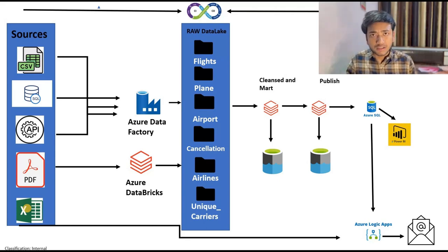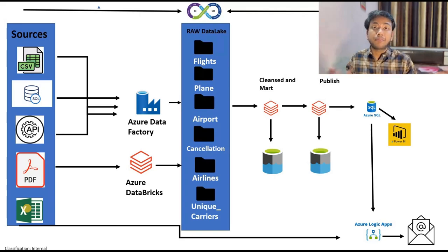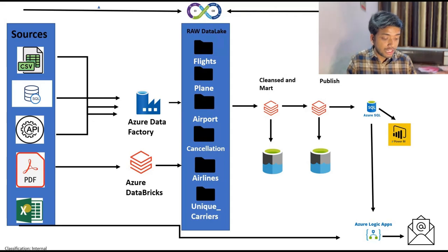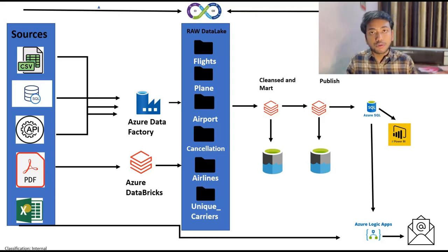We can do that via Logic App. We can also write a Python script or PowerShell script using the pandas and SMTP library. But since we are working on Azure and I want to show you how pipelines work in Azure data engineering, I pulled the data out and sent emails with the help of Logic App.